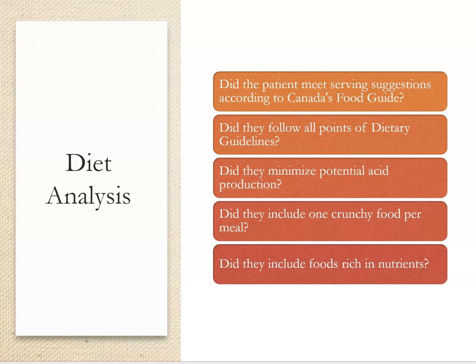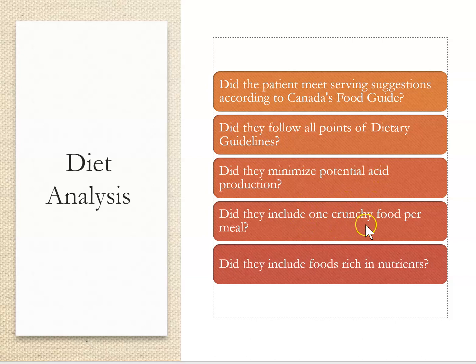Canada's Food Guide also highlights good food habits: cooking more often, enjoying food mindfully, eating with others, limiting processed food, and making water the drink of choice. Look at the diet diary to see if they're minimizing acid production — are they eating cheese, protein, or milk to buffer acidity? Are they eating crunchy foods like raw vegetables to stimulate salivary flow?